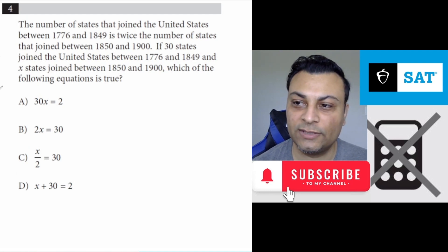Question 4 says the number of states that joined the United States between 1776 and 1849 is twice the number of states that joined between 1850 and 1900. If 30 states joined the United States between 1776 and 1849, and X states joined between 1850 and 1900, which of the following equations is true?